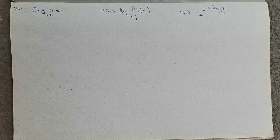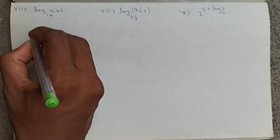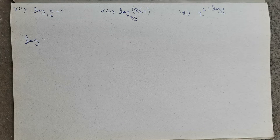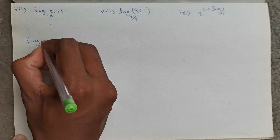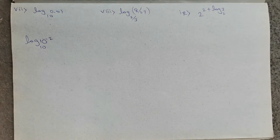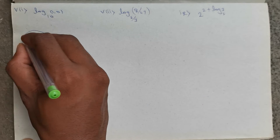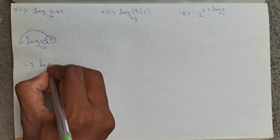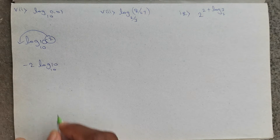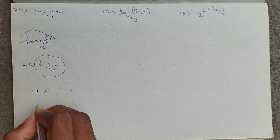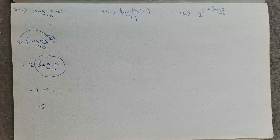Next, log 0.01 base 10. Log 0.01 can be written as 10 power minus 2, base 10. Now here power minus 2 will go to the front as it is: minus 2 into log 10 base 10. Log 10 base 10 value is 1. So minus 2 into 1 is nothing but minus 2.